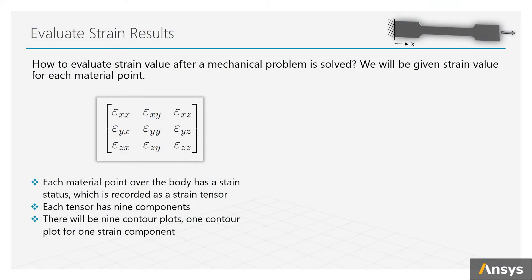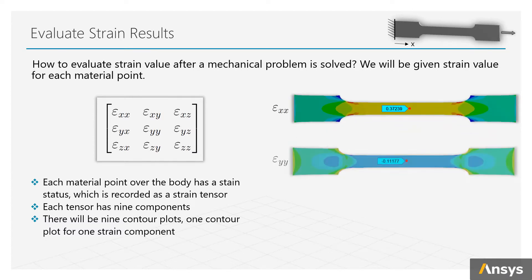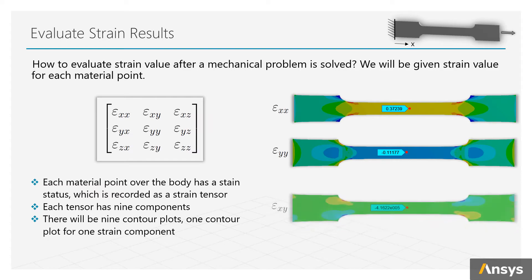Each tensor has 9 components, so if we hope to draw the contour plot for a strain over a body, there will be 9 contour plots, 1 plot for 1 strain component.